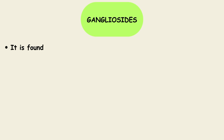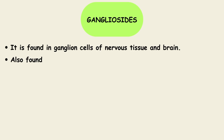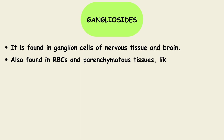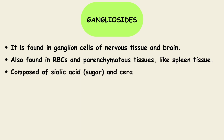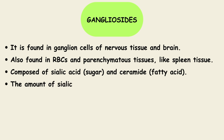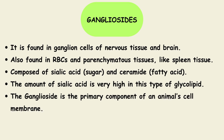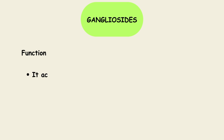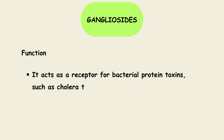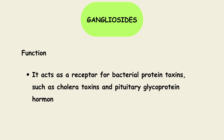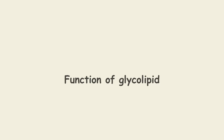Ganglioside, which is another type of glycolipid, is found in ganglion cells of nervous tissues and brain. It is also found in RBCs and parenchymatous tissues like spleen tissues. It is composed of sialic acid, which is a sugar, and ceramide, that is a fatty acid. The amount of sialic acid is very high in this type of glycolipid. The ganglioside is the primary component of an animal cell membrane. The main function of ganglioside is it acts as a receptor for bacterial protein toxins like cholera toxins and pituitary glycoprotein hormones.